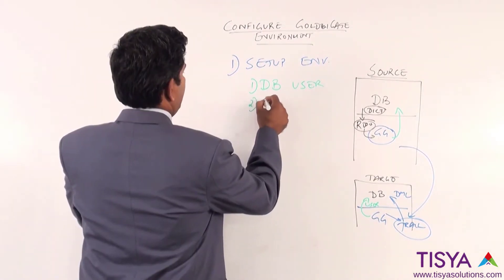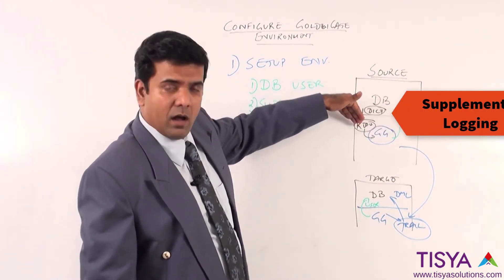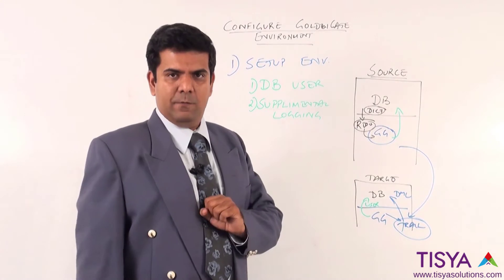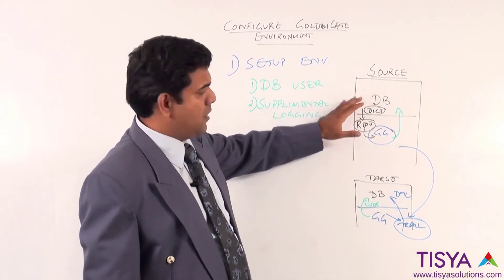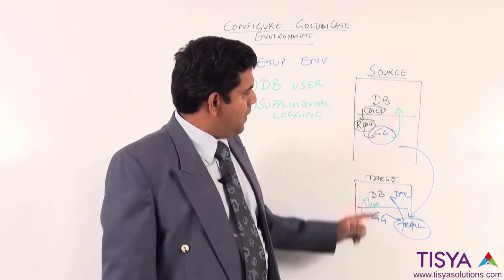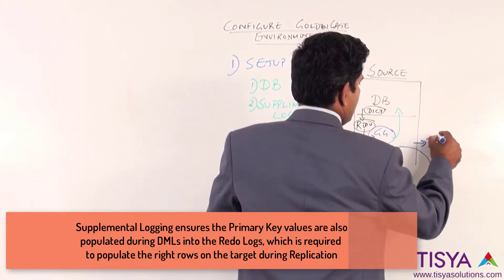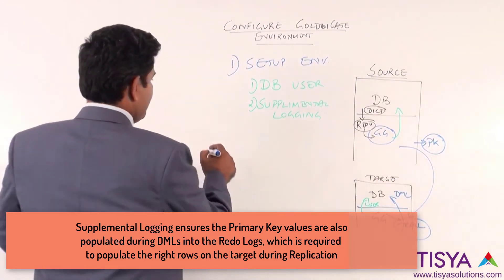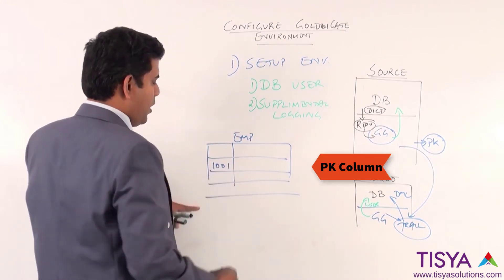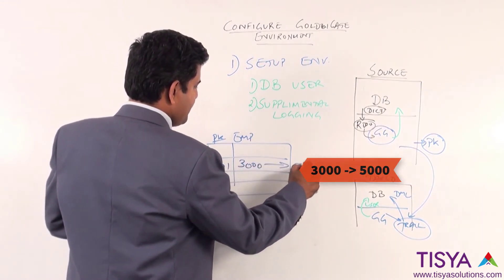The next step is to configure supplemental logging. By default, whenever the database is writing to the redo logs, it just keeps capturing information about the row ID that got modified and the changed value. This is sufficient for database recovery, but when the same data has to be replicated into a different database, it needs the exact information about the primary key. For example, if there is an employee table and a DML is occurring on employee 1001 — where the employee ID is the primary key — and the salary is changed from 3000 to 5000.